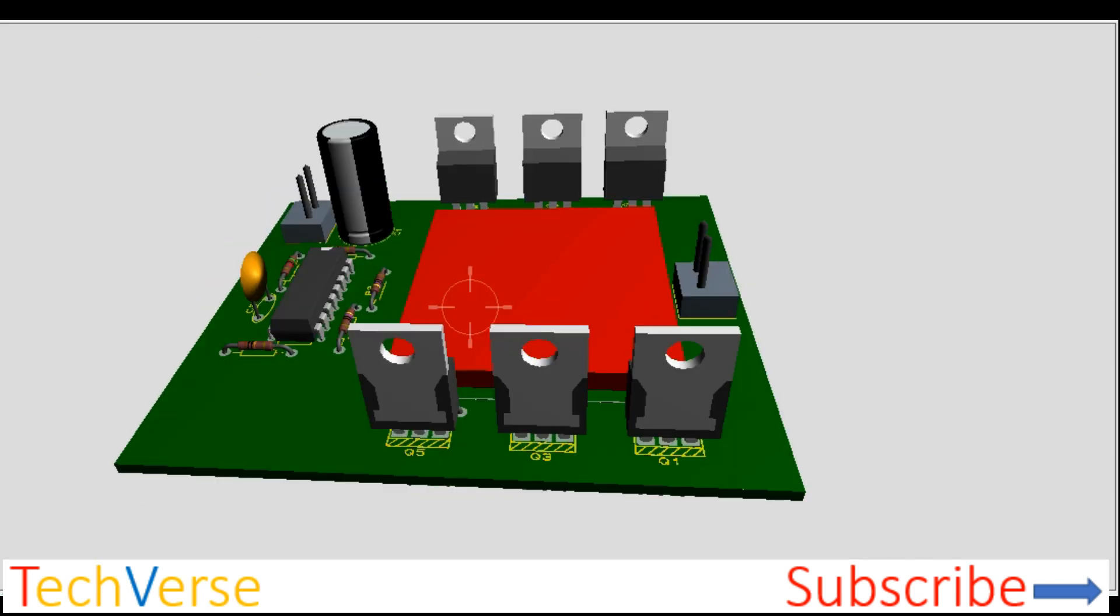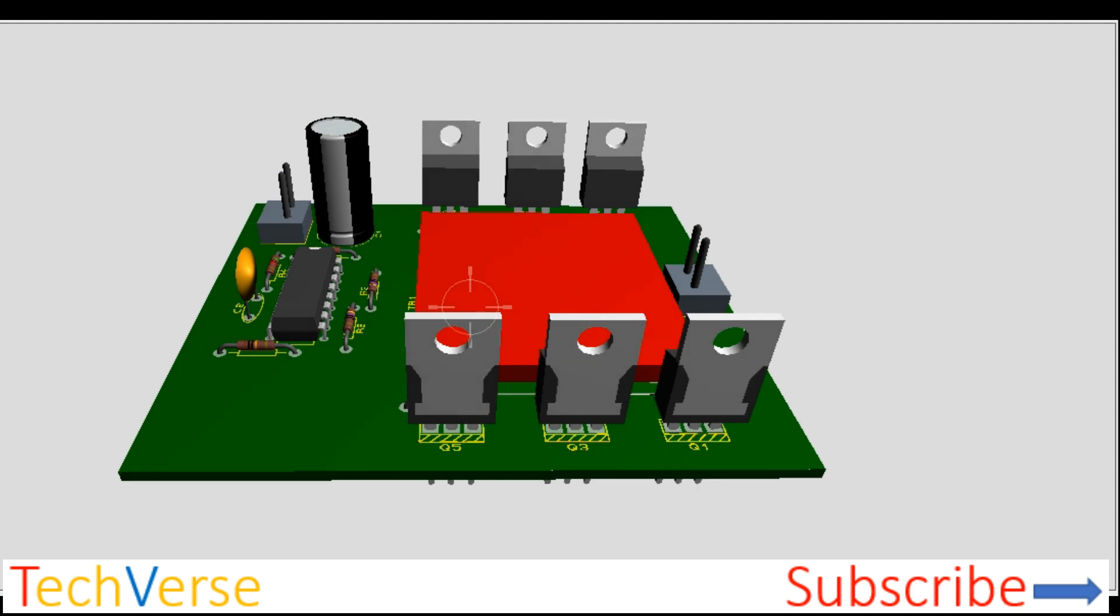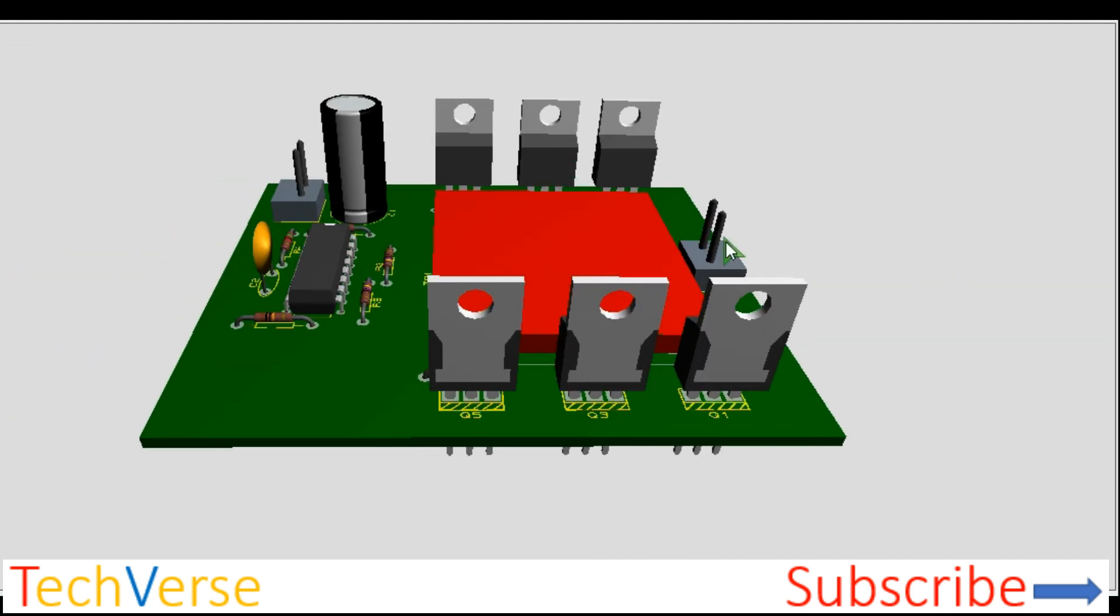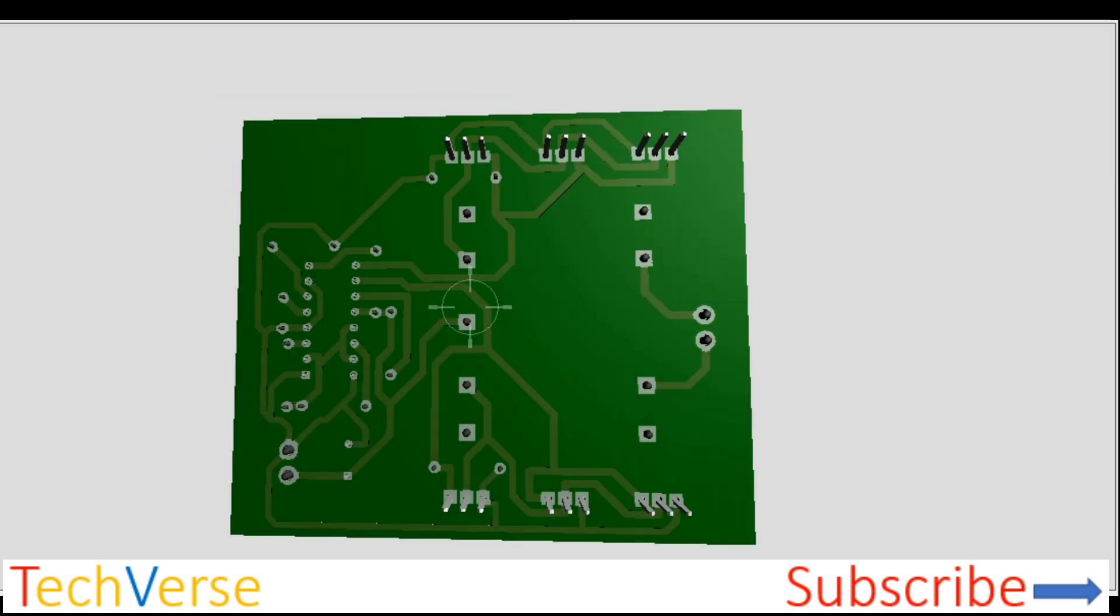So the final project looks as shown. It's a very neat circuit. So everything is as per the PCB: the input, the output, the power MOSFET for one side, the other side, the IC and its biasing circuit, the input capacitor. So the bottom side is as shown here.